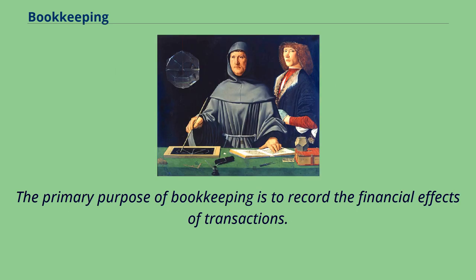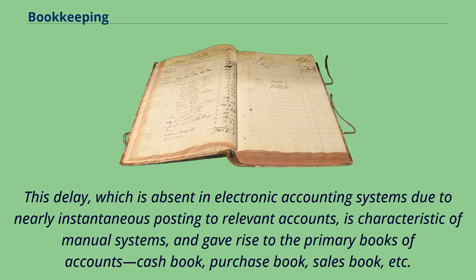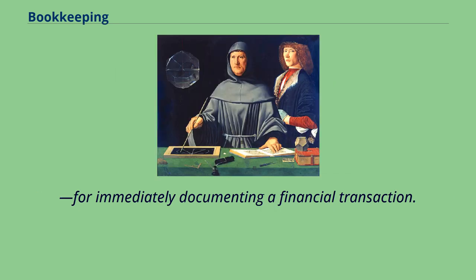The primary purpose of bookkeeping is to record the financial effects of transactions. An important difference between a manual and an electronic accounting system is the former's latency between the recording of a financial transaction and its posting in the relevant account. This delay, which is absent in electronic accounting systems due to nearly instantaneous posting to relevant accounts, is characteristic of manual systems, and gave rise to the primary books of accounts — cash book, purchase book, sales book, etc. — for immediately documenting a financial transaction.